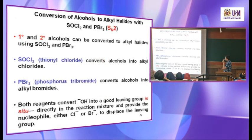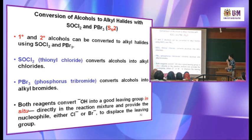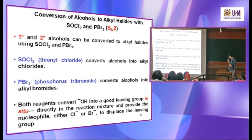Now we look at conversion of alcohol to alkyl halide using thionyl chloride (SOCl₂) and phosphorus tribromide (PBr₃). Both reagents convert the OH group into a leaving group in situ — directly in the reaction mixture — and also provide the nucleophile in the same reaction mixture. Either chloride or bromide is produced to replace the leaving group.